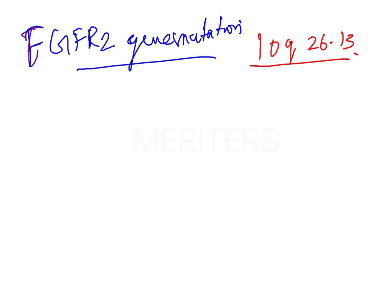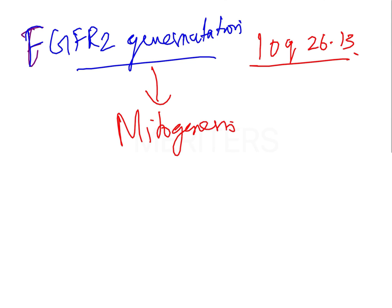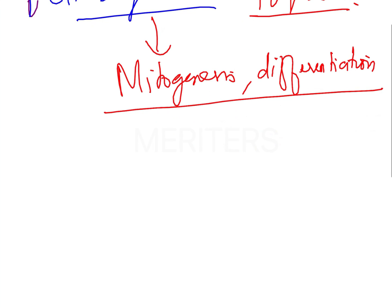The protein encoded by this gene is a member of the fibroblast growth factor family, where the amino acid sequence is highly conserved between family members. The extracellular portion of the protein interacts with fibroblast growth factors, ultimately influencing mitogenesis and differentiation. It has a high affinity for keratinocyte growth factor.